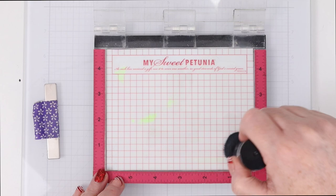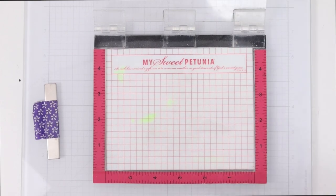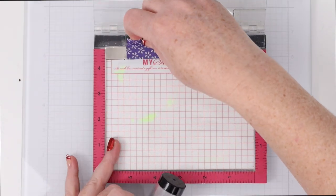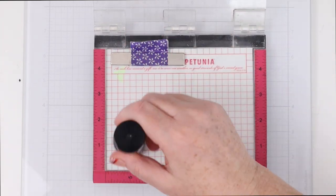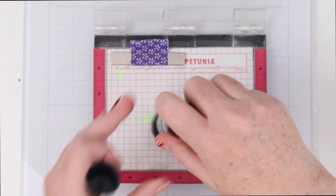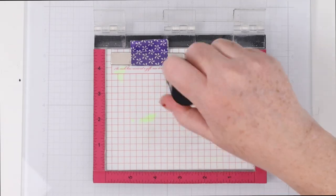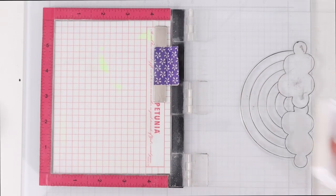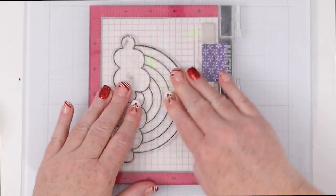You definitely want to use lots of anti-static powder because acetate sheets have tons of static on them so load it up with powder you can always wipe it away later once everything is heat set and cooled off.